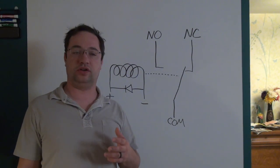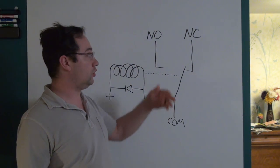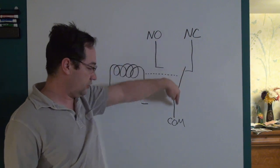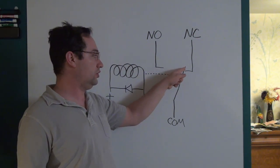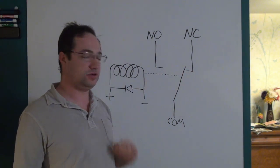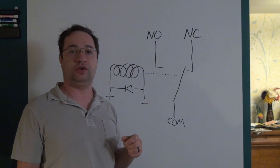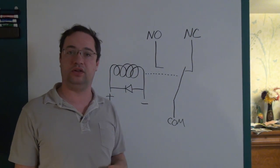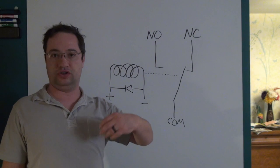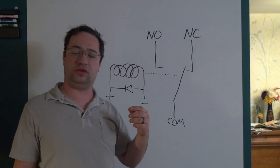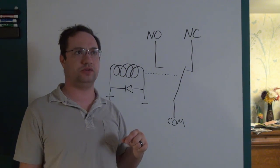With AC current, it's easier to deal with because whenever the contact switches — for example, if you have something on the normally closed contact and current is flowing — as the contact begins to move and the contacts separate, an arc will form, and this is pretty much unavoidable. But with AC, that arc will quench quickly because the current goes to zero 120 times a second, so in the time the relay contact starts to move and an arc forms, the arc will quench.